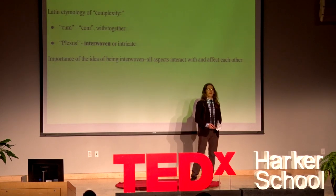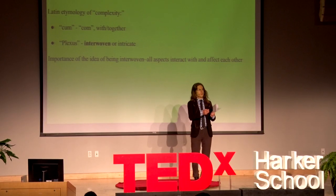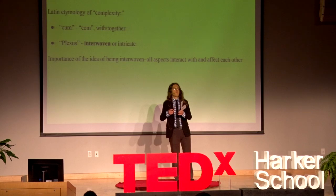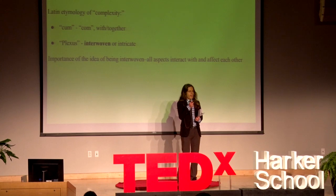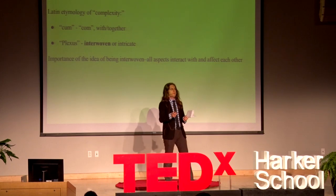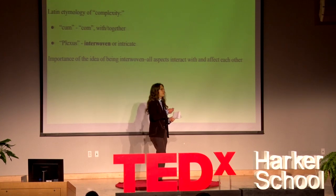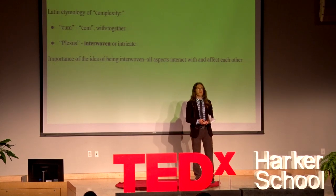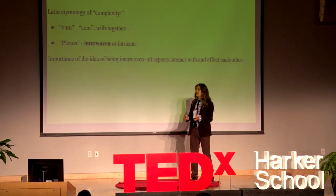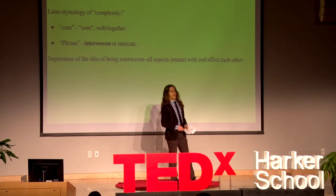We should look at the word itself. It comes from Latin — from 'cum' and 'plexus' — and it means 'woven together.' Sometimes we think of complexity as just meaning that something has many different parts, but that's not the crux of the word. It really means that everything in a complex situation or problem — all of those parts — are extremely interwoven together and inextricable. If you move one part, it moves everything else in that system.